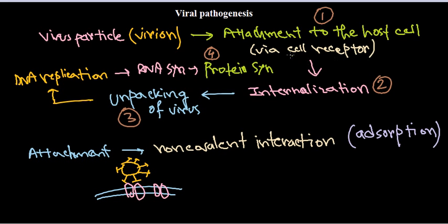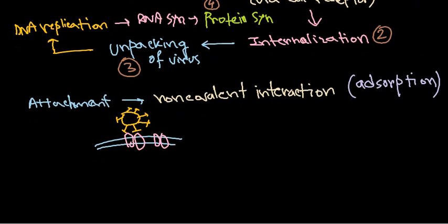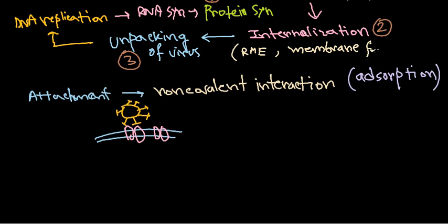After attachment, we move to the second part: internalization. The internalization phase can occur by two different mechanisms. One is via receptor-mediated endocytosis, or RME, and the second is via membrane fusion.